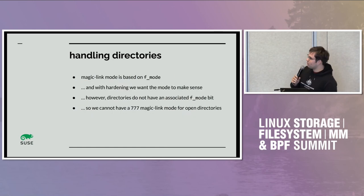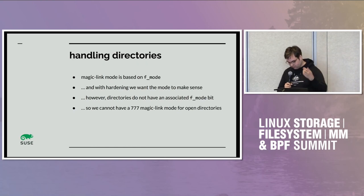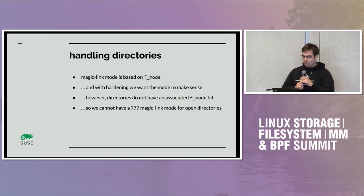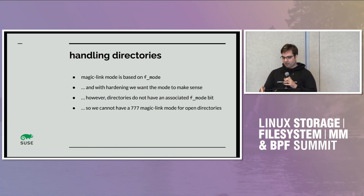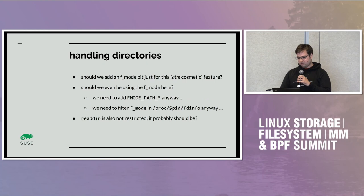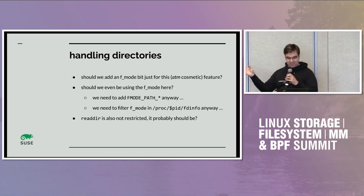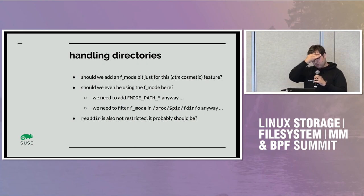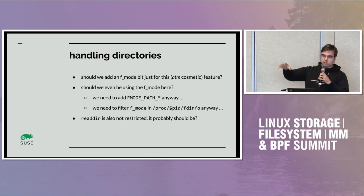Directories: there is no way to detect from the f_mode that a file is a directory, so you'd need another way of detecting this. For future-proofing, we'd want rwx all set. Directories are not restricted by this patch. Should there be an f_mode is-a-directory bit that is only cosmetic at the moment? Should we even use the f_mode bit? Also, reader restrictions are currently not covered because of the way magic links work — everything is piped through ND_jump_link.